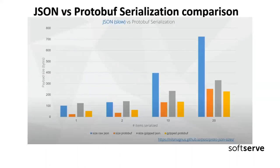Here we have a JSON versus Protobuf serialization comparison. In almost all cases, Protocol Buffer produces smaller data than JSON. When JSON is 100 bytes, the same Protobuf data will be more than half the size. Even comparing zipped Protobuf and zipped JSON, compressed and uncompressed Protobuf are almost the same size across all sizes.